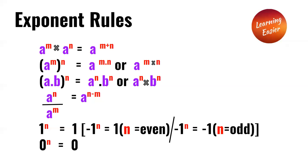If we have negative 1 to the power of n and n is an even number, the answer would be 1. And if n is an odd number, negative 1 to the power of n would be negative 1. 0 to the power of anything is 0.